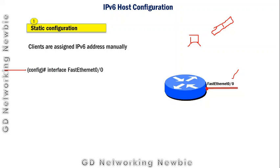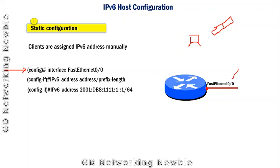To assign an IPv6 address to the interface, we use the command: 'IPv6 address' followed by the IPv6 address we want to assign, and then we also provide the prefix length. This is how we can statically or manually configure an IPv6 address to any particular interface of a router or to a computer. Static or manual means that address will be permanent unless someone changes it.